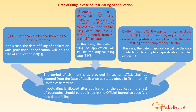What will be the date of filing in case of post-dating? Case 1: When an applicant files a provisional specification and then within 12 months files a complete specification, the date of filing is the date of filing the provisional application — referred to in Section 9(1). Case 2: When an applicant filing a complete specification requests conversion to a provisional specification within 12 months from the original filing date, and then files a new complete specification within 12 months from the original filing date, the date of filing is regarded as the original filing date — referred to in Section 9(3).